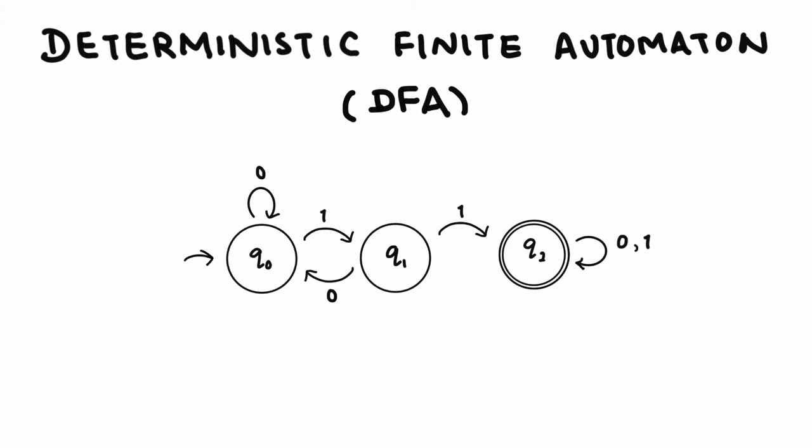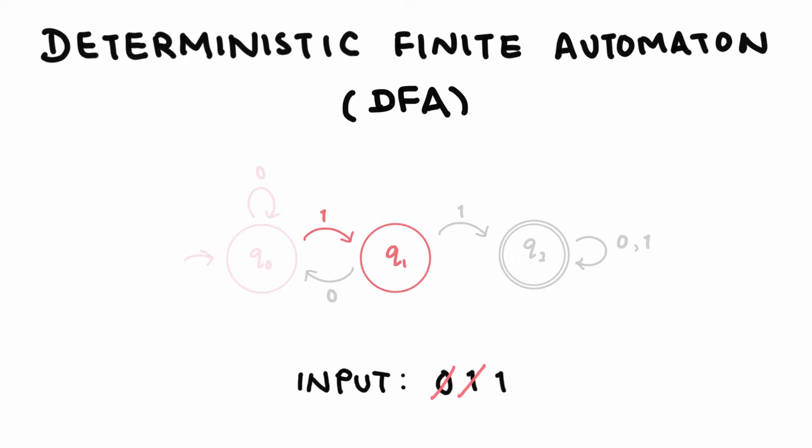Recall how a deterministic finite automaton takes in a string as an input, and for every symbol in the input, we always know which state to transition to next.